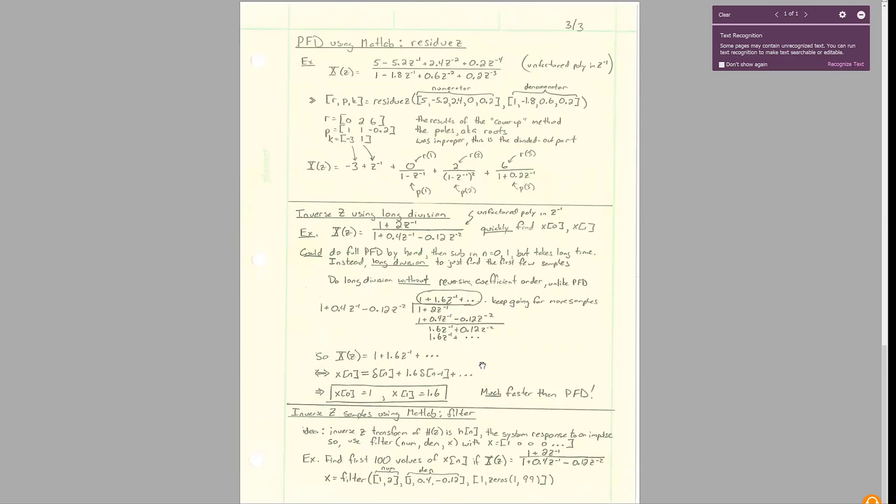So if you just need to find your first or your first couple of outputs, just do long division way faster than trying to do a partial fraction decomposition for this, way, way, way faster.